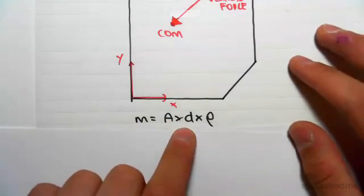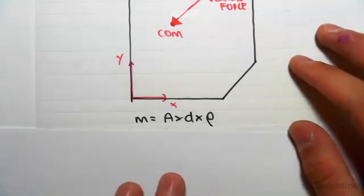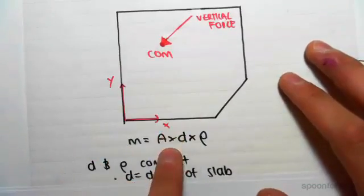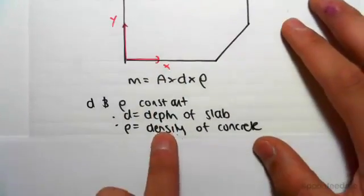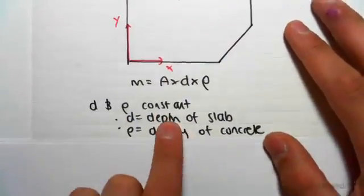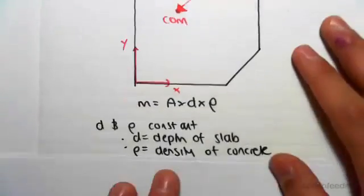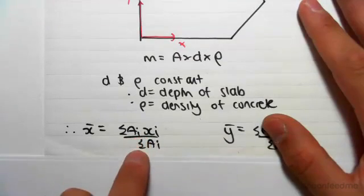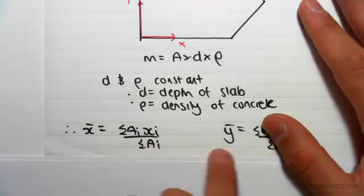Now in our case, we know that the mass is the area times the depth times the density. Now because in our slab the depth of the slab is constant everywhere and the density of the concrete is constant, we can just simplify this formula to just x̄ is equal to the sum of the area times xᵢ divided by the sum of all the areas, and the same thing for the y.